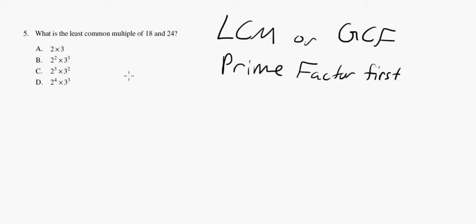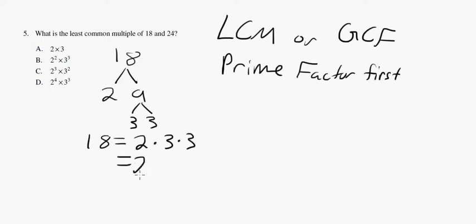Okay, so prime factor 18. 18 factors into 2 times 9, and 9 factors into 3 times 3. So the prime factors of 18 are 2 times 3 times 3, or we usually write it like this, 2 times 3 squared.